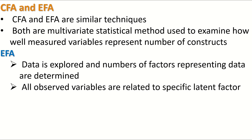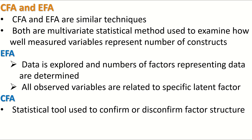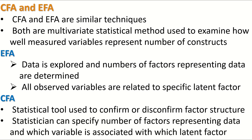CFA, on the other hand, is a multivariate statistical method used after performing EFA. It is used to confirm or disconfirm the factor structure — the hypothesized model containing the number of factors and the number of items linked to each specific factor. The statistician can specify the number of factors representing the data and which variable is associated with which latent factor.